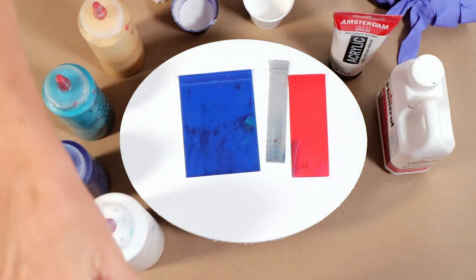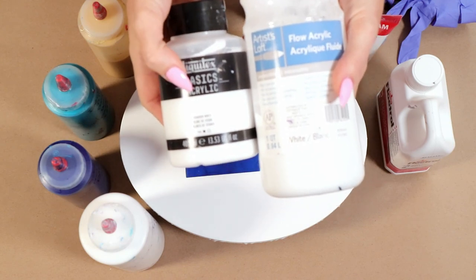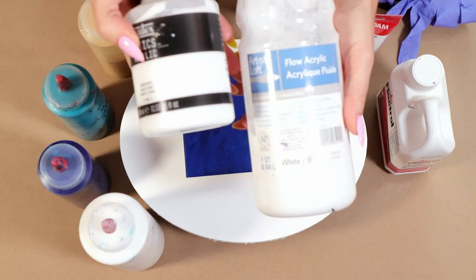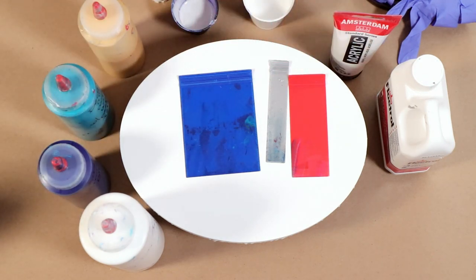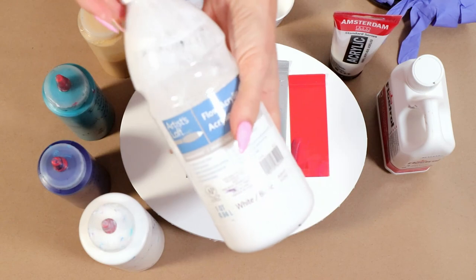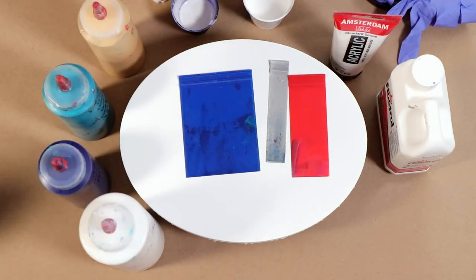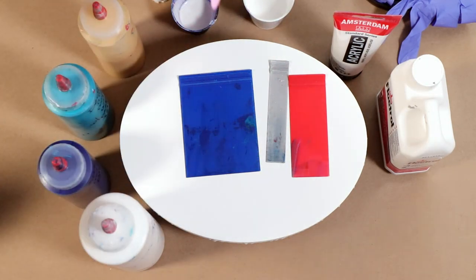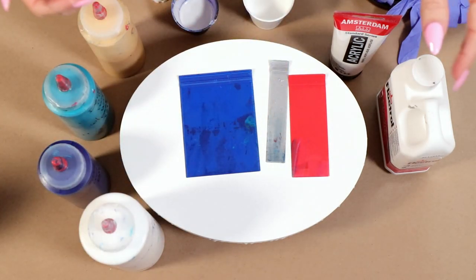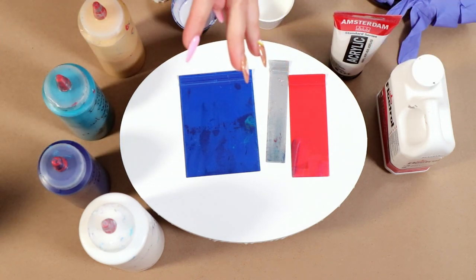My white is two whites mixed together: Liquitex Basics Titanium White and Artist Loft Flow Acrylic White. I know people have been having issues with the Artist Loft White settling up too much. I've never had that problem because I've always mixed mine with the Liquitex Basics, half and half, and then pouring medium to thin.